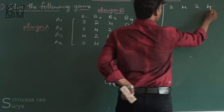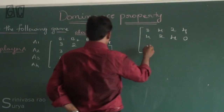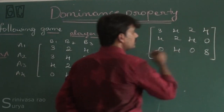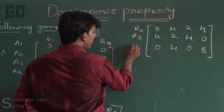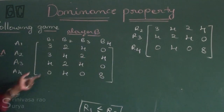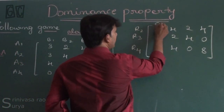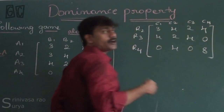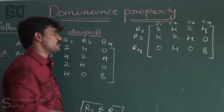After deleting R1, the remaining matrix has rows R2 (3, 4, 2, 4), R3 (4, 2, 4, 0), and R4 (0, 4, 0, 8). We relabel strategies as R1, R2, R3 for rows and C1, C2, C3, C4 for columns (corresponding to B1, B2, B3, B4).